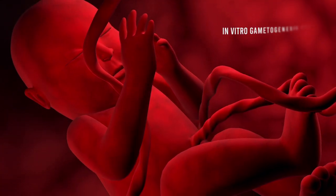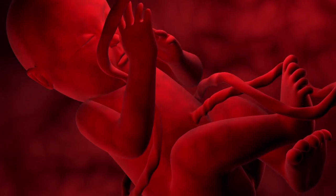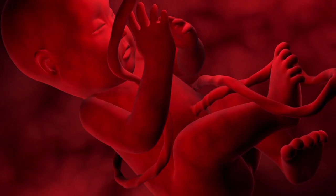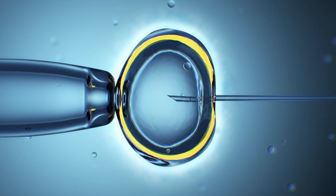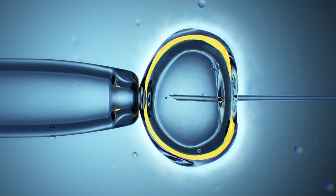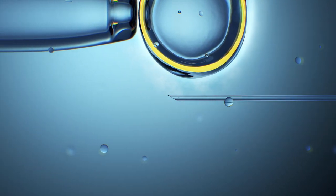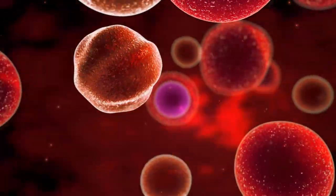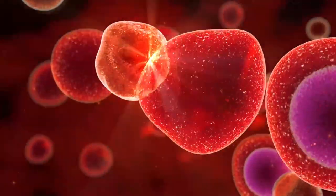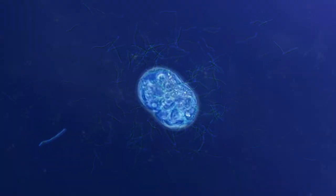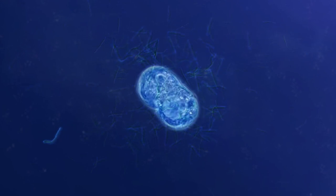One such method is known as IVG. IVG involves the creation of gametes or reproductive cells from ordinary skin or blood cells. Through a series of laboratory manipulations, these cells are reprogrammed into either sperm or egg cells. The process begins by obtaining a small sample of the individual cells, typically skin or blood cells. Then researchers utilized induced pluripotent stem cells to reprogram these cells back to their embryonic state. This allows them to be transformed into any other cell type, including germ cells responsible for producing sperm or eggs.